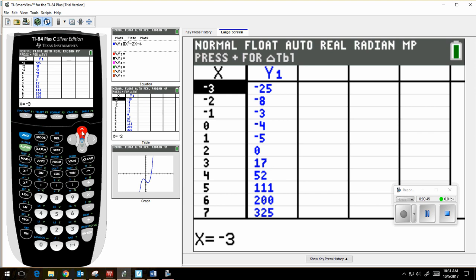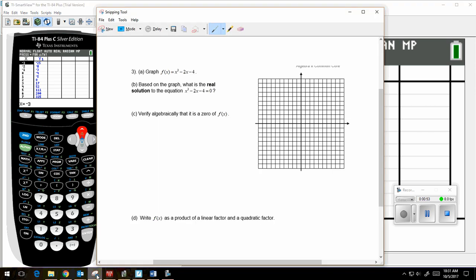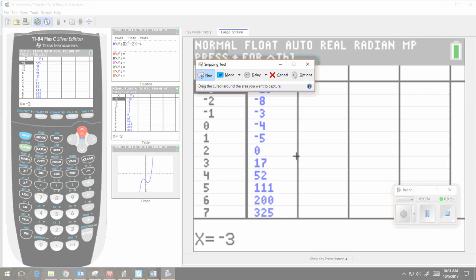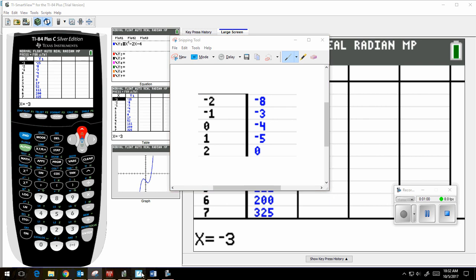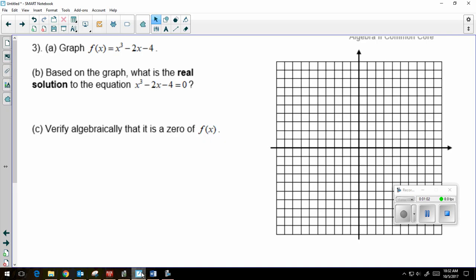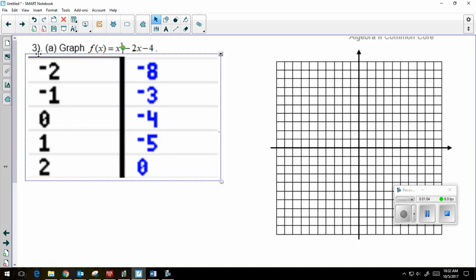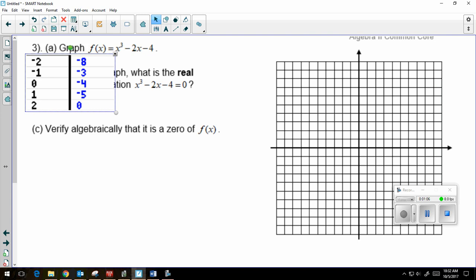So what I'm going to do is I'm going to copy down the xy table from my calculator onto my worksheet. So I'm going to take a shortcut since I have this snipping tool. So that's the first thing.